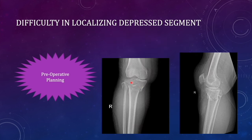In this part also you can see double lines — there is a subcondylar line here and here. So we are not sure whether the depression is in the anterior or posterior part. This is because lateral views are often inadequate.